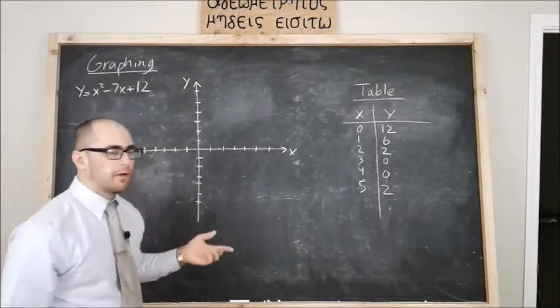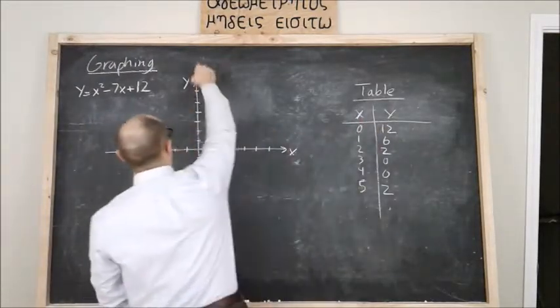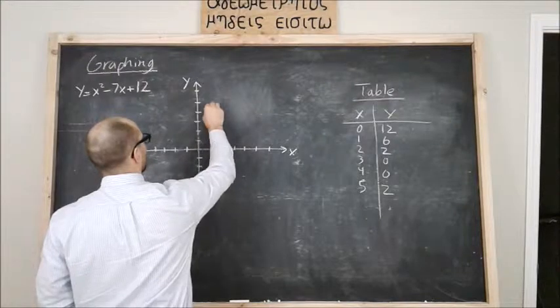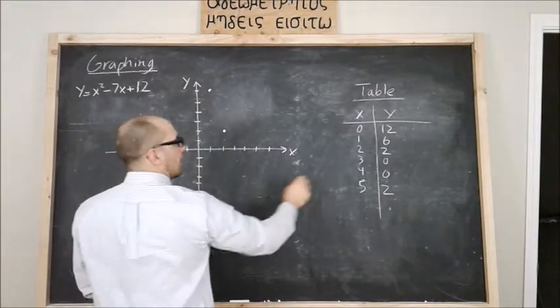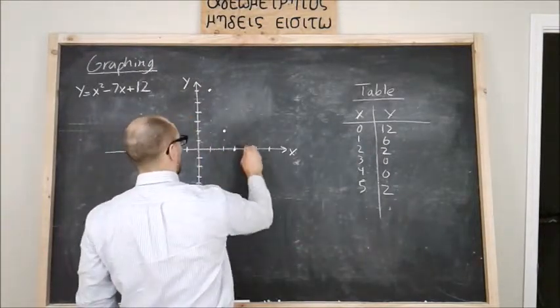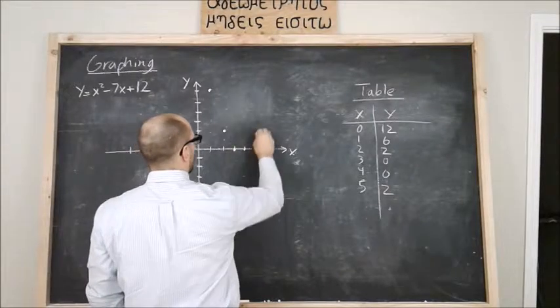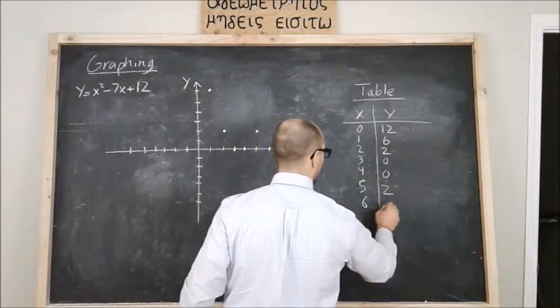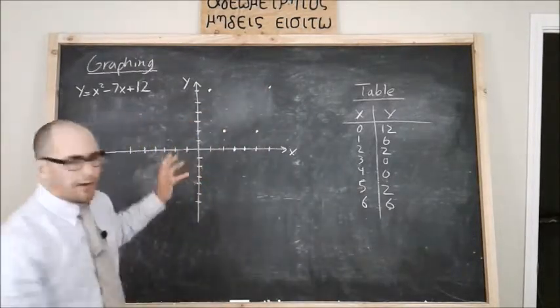Now let me erase this, we'll plot. Remember our coordinate pairs on the Cartesian plane. Well zero, 12, that's somewhere up here. One and six, so that's over one up six, one, two, three, four, five, six. I'm going to put a dot there. Two and two: over two up two. Three and zero: over three up zero is right there. Four, zero: over four and up zero. Five and two: one, two, three, four, five, up two. If I plugged in a six, you can check me on this, but I should get a six.